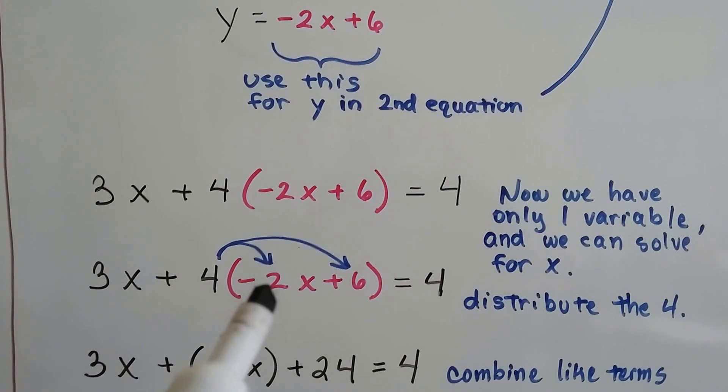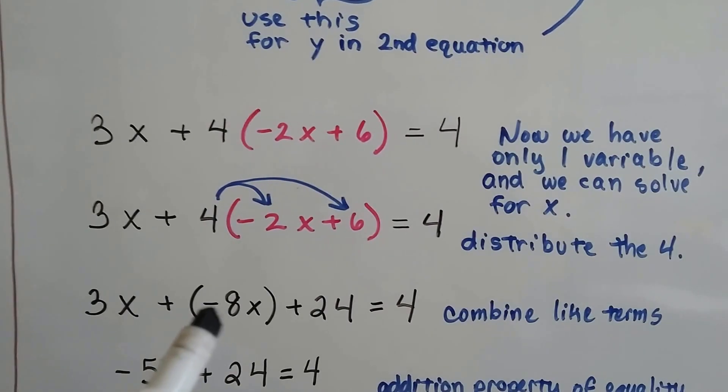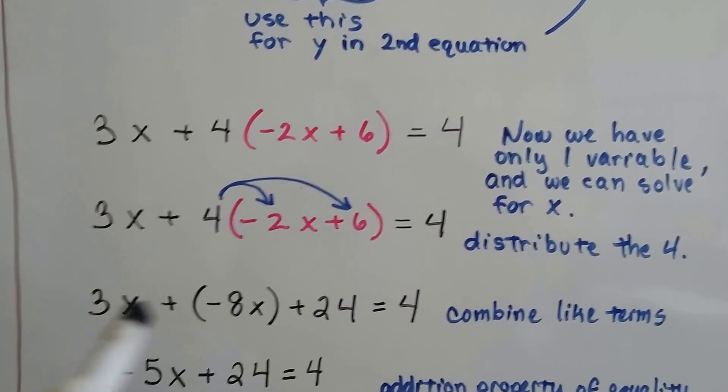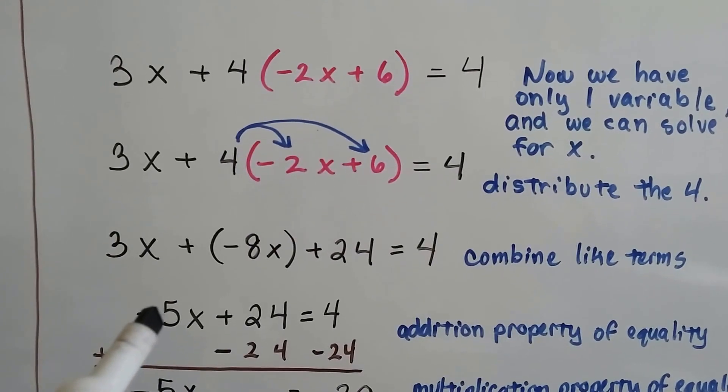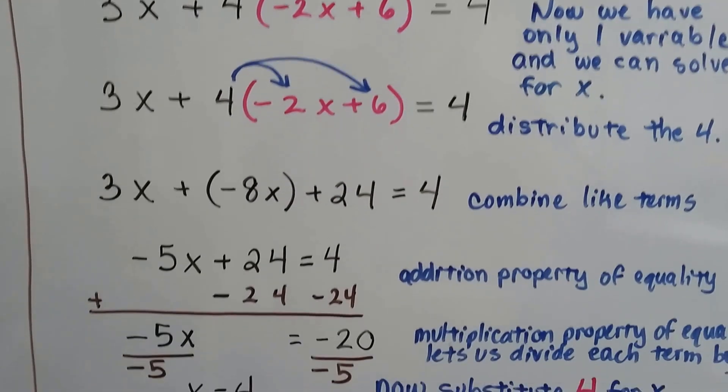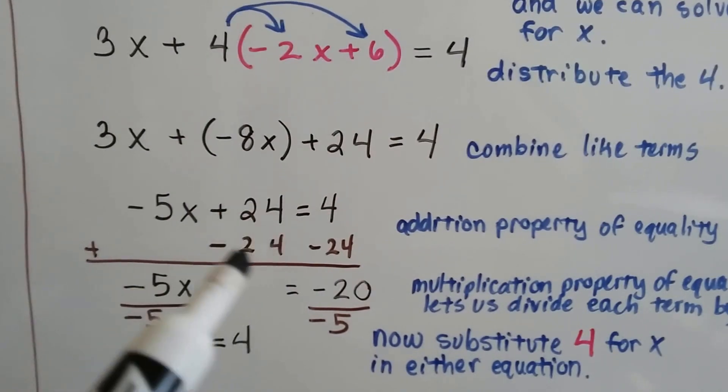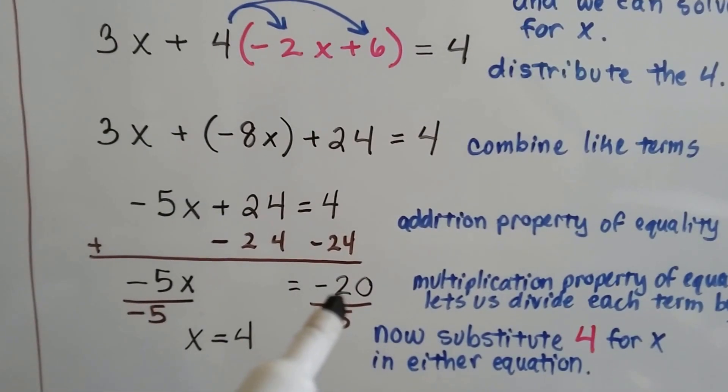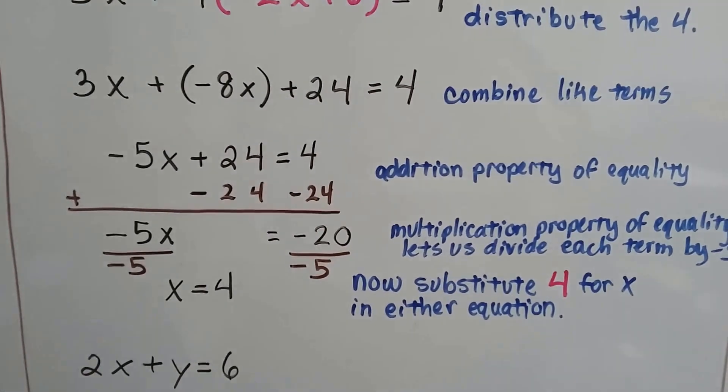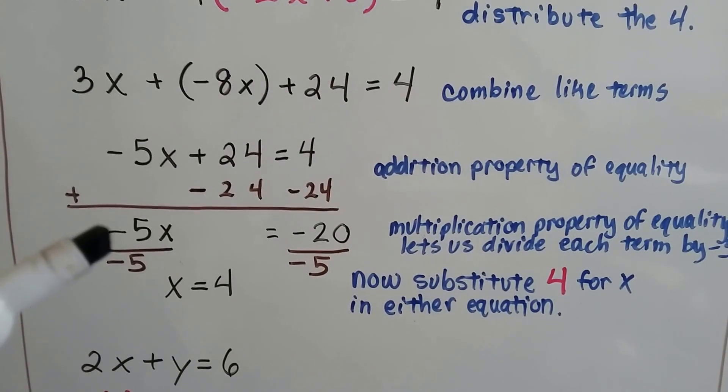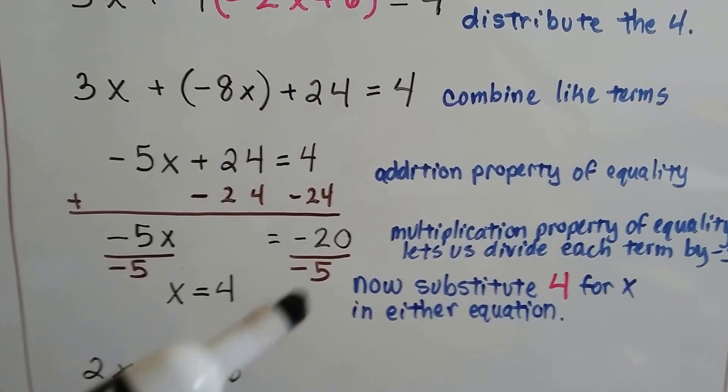We're going to distribute this 4 to the negative 2x and to the positive 6. We're going to get 3x plus negative 8x plus 24 equals 4. Now what we have to do is combine these like terms. Positive 3x plus negative 8x is going to give us negative 5x plus that 24 equals 4. Now we can use the addition property of equality. We want to isolate the x to solve for x. This creates a zero pair here by adding negative 24 to each side. This makes negative 20 on this side, and now we just have negative 5x equals negative 20. We can use the multiplication property of equality that's going to let us divide each term by this coefficient negative 5, and we're going to get 1x equals positive 4.